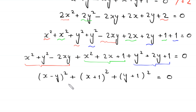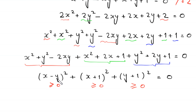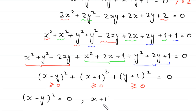The square of any number is always non-negative. So x minus y whole squared is greater than or equal to 0, x plus 1 whole squared is greater than or equal to 0, and y plus 1 whole squared is greater than or equal to 0. The sum of three non-negative terms can only equal 0 if each term is equal to 0.